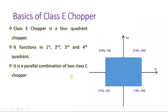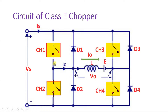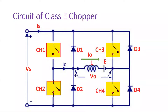Now let us understand the circuit of Class E chopper. There are a total of 4 switches: Switch 1, Switch 2, Switch 3, and Switch 4. The load consists of an inductor and battery E. The conventional current direction shown is considered the positive current direction — the reference direction for output current. Voltage is considered positive with this terminal positive with respect to the other terminal.